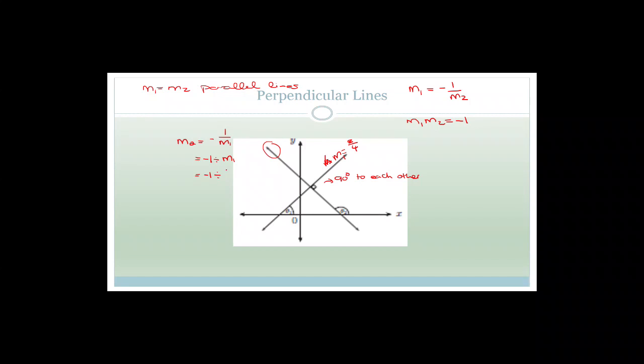Another way to think of it is the product M1 times M2 equals minus 1. So if this gradient M1 is 3 over 4, then M2 would be minus 1 over M1, which is minus 1 divided by 3 over 4. When we divide, we tip and times, so it becomes minus 1 times 4 over 3, which is minus 4 over 3. Or you can just flip it and put a minus sign in front of it.